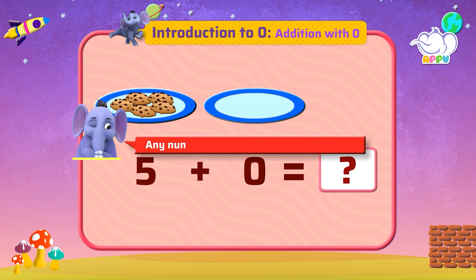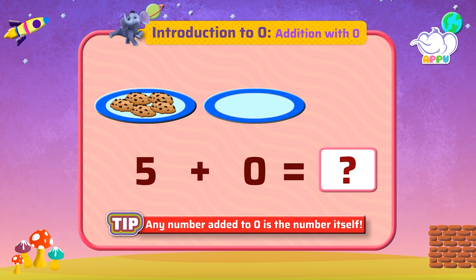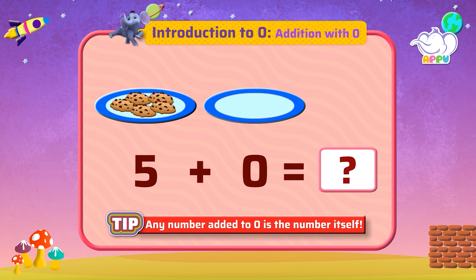Any number added to zero is the number itself. Zero means nothing. Five and nothing makes five. We have five cookies in all.